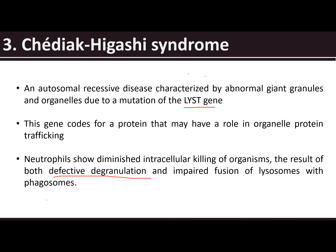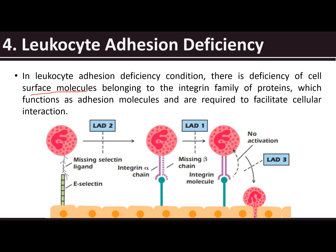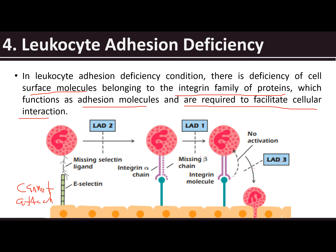Then we also have leukocyte adhesion deficiency. There is a deficiency of cell surface molecules belonging to the integrin family of proteins, which function as adhesion molecules required to facilitate cellular interaction. There is a problem with the integrin; the selectin found in the endothelium cannot attach to the ligand integrin, causing a problem for the WBC to adhere and go to the site of infection.